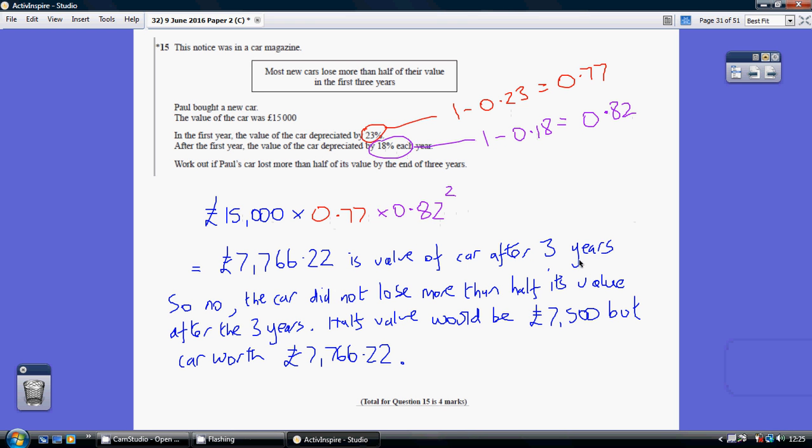That's the value after three years. Now, does Paul's car work out if Paul's car lost more than half of its value by the end of three years? Well, given its initial value was £15,000, if it lost more than half its value it would be worth less than £7,500.